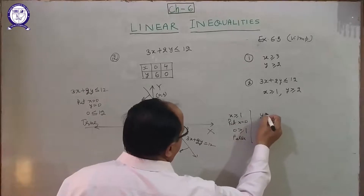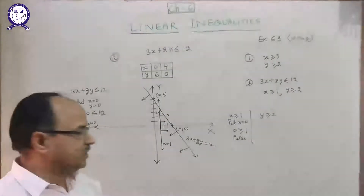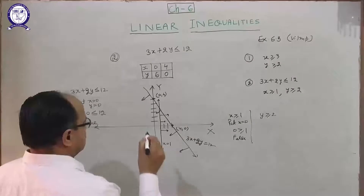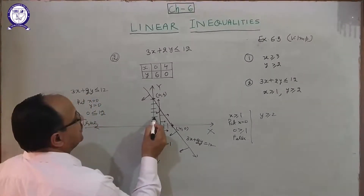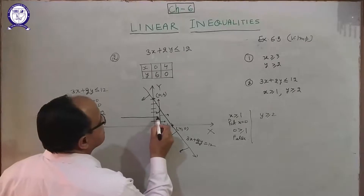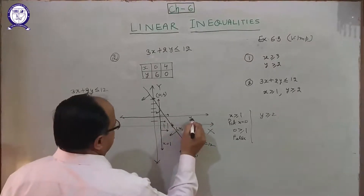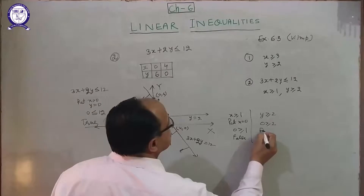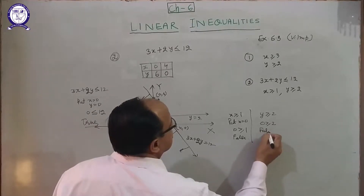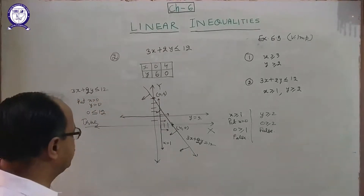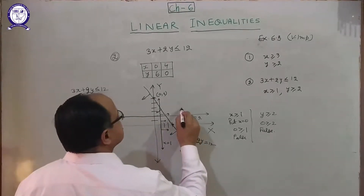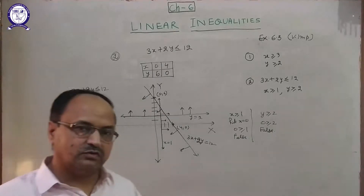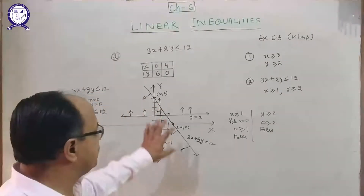And next, y greater than or equal to 2 means the line parallel to the x-axis. Count 1, 2 — this is the line y equals 2. When you put y equal to 0, you get 0 greater than or equal to 2, which is false. Therefore it is away from the origin. Now find the solution of all three equations — which portion satisfies all three?